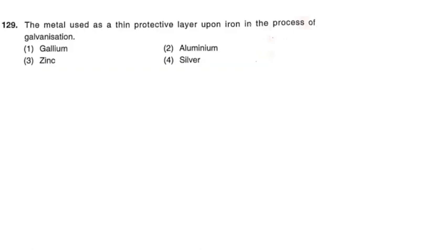Next question: The metal used as a thin protective layer upon iron in the process of galvanization. Options: gallium; aluminium; zinc; silver. The correct option is zinc. Zinc is coated over iron in the galvanization process.